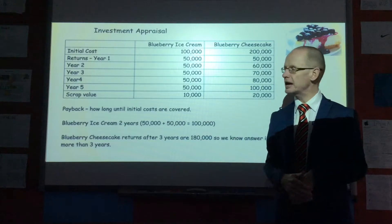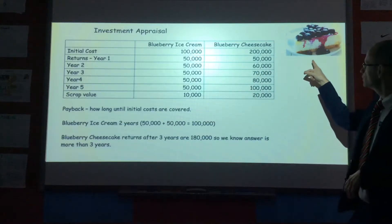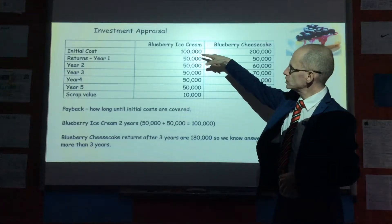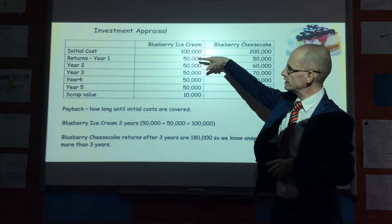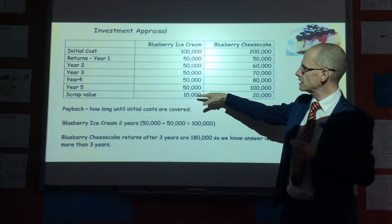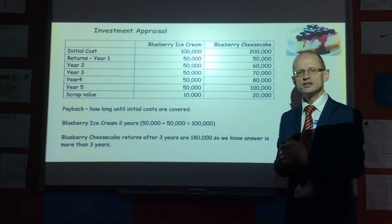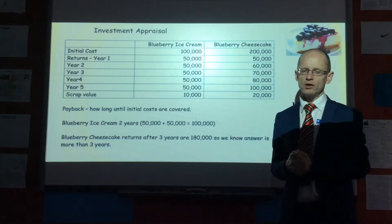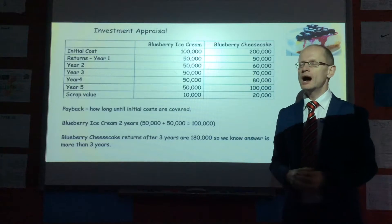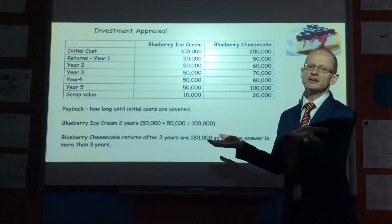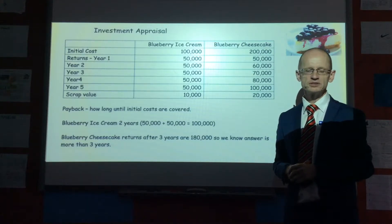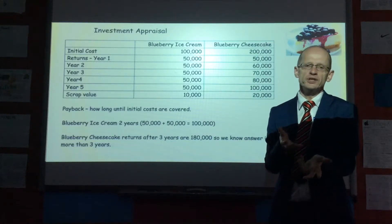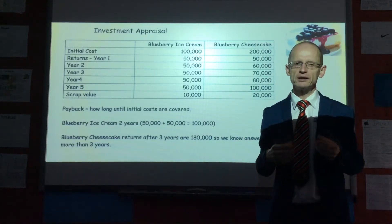In this example, the business has to choose between blueberry ice cream and blueberry cheesecake. The initial cost is $100,000 for blueberry ice cream, and then you get the returns per year. Sometimes the examiner adds something called scrap value — this is the value of the equipment or machines at the end of the period. Instead of discarding it, the business may sell the equipment. Think of it like an iPhone: after two years, you sell it for $100. $100 is better than nothing.